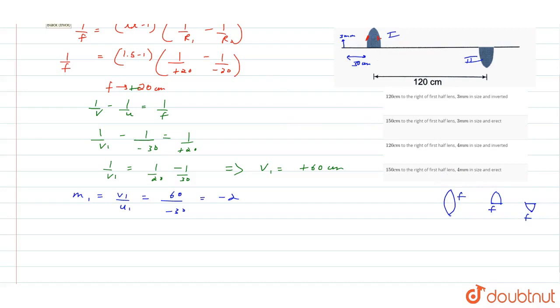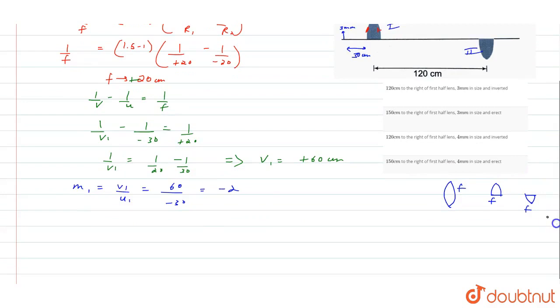So now we use the formula 1 by v minus 1 by u is equal to 1 by f. So 1 by v2 minus 1 by u2 is equal to 1 by f. So if we solve it, then we add value...